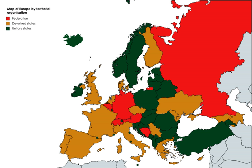Headquartered in Ottawa, the Forum of Federations partner governments include Australia, Brazil, Canada, Ethiopia, Germany, India, Mexico, Nigeria, and Switzerland.